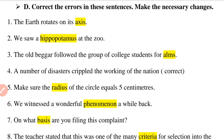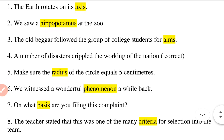Question 2: 'We saw a hippopotamus at the zoo.' Question 3: 'The old beggar followed the group of college students for alms.' Question 4: 'A number of disasters crippled the working of the nations.' There is no error; it is totally correct.